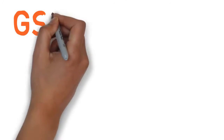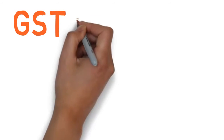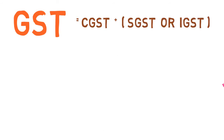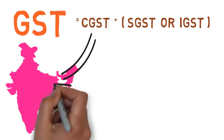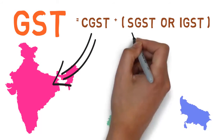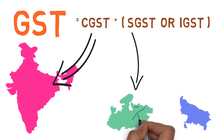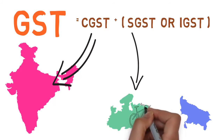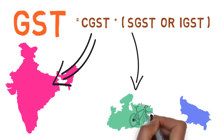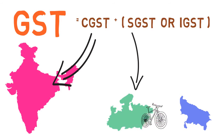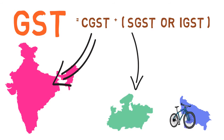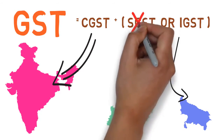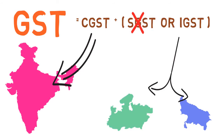Let's look at GST in detail. GST is a combination of CGST and SGST, or IGST. CGST is Central GST, which is paid to the Central Government. SGST is State GST, which is paid to the State Government. IGST is Integrated GST, which applies when goods and services move interstate. For example, if a product is manufactured in Madhya Pradesh and sold in another state, IGST is distributed between both the Central and State governments, and in that case SGST will not be collected.